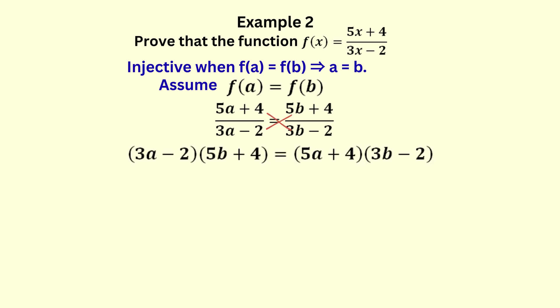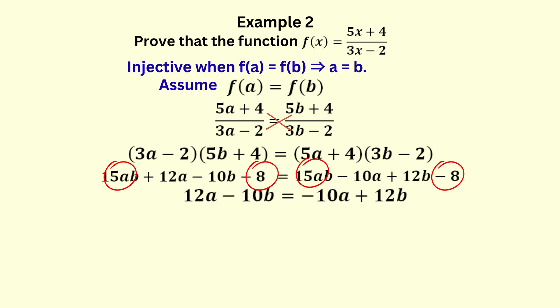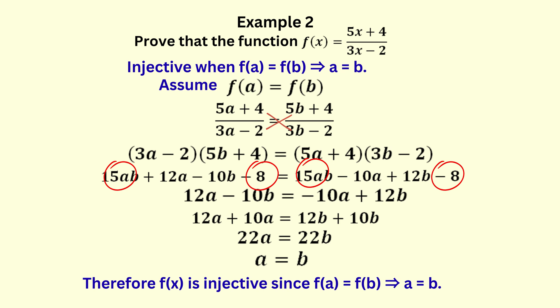So, 5a plus 4 over 3a minus 2 is equal to 5b plus 4 over 3b minus 2. To simplify we can cross multiply. Now expand the brackets on both sides. Subtract 15ab from both sides and negative 8 from both sides. Then group the terms in a on the left and the terms in b on the right to get 22a equals 22b. Divide both sides by 22 and we get a equals b. So, f of x is injective since f of a equals f of b leads to a equals b.